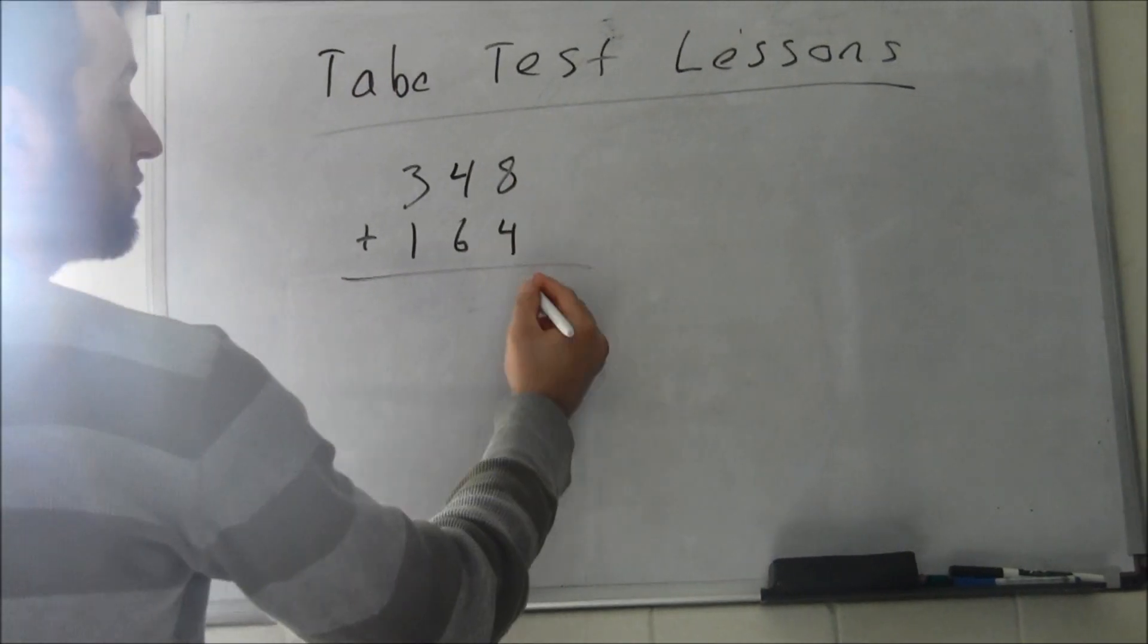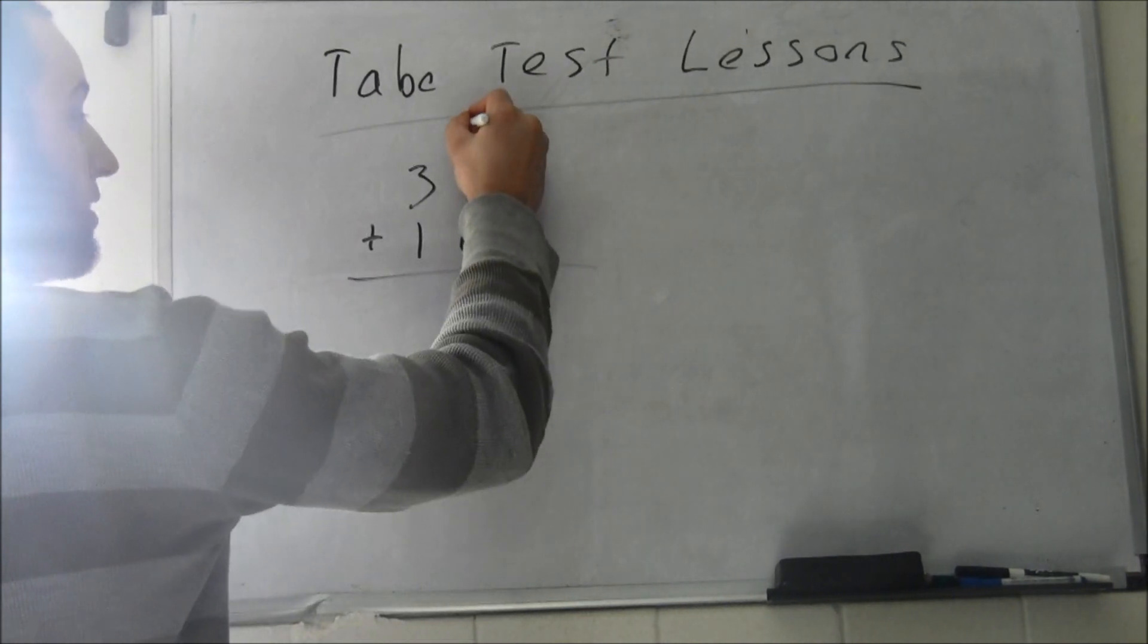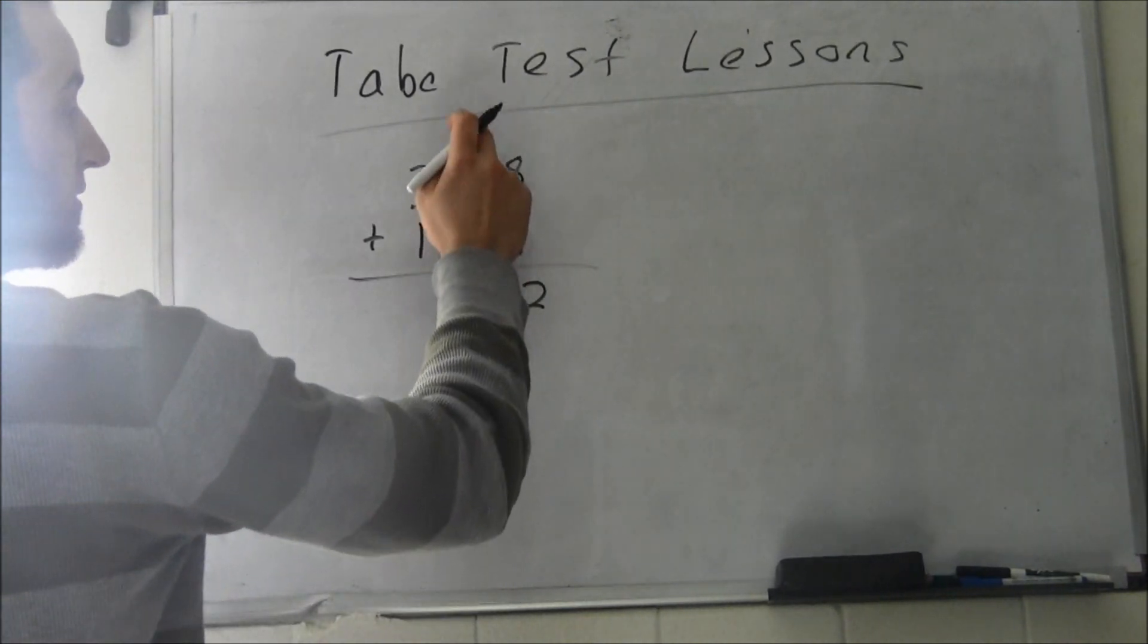8 plus 4 is 12, 2 down there, 1 up there. 6 and 4 is 10, 11. Your answer is 512.